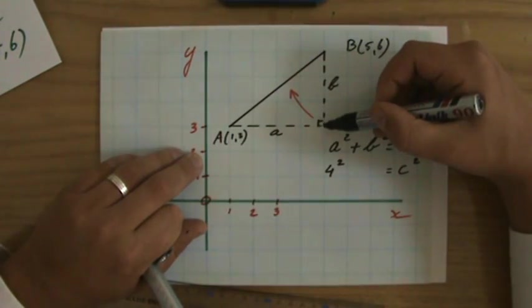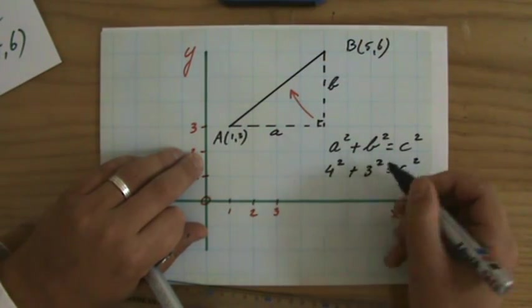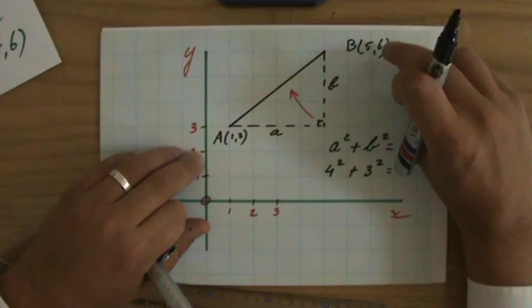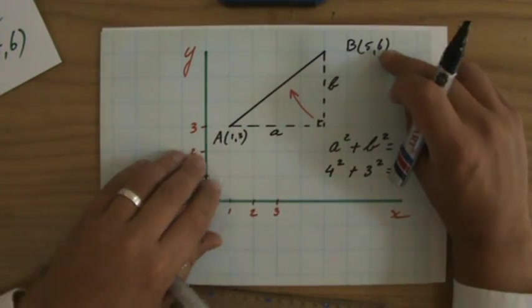What about B? Well, I can even count that, 1, 2, 3 blocks. And that, indeed, is the vertical difference in length, because that is 6 minus 3. That is 3.